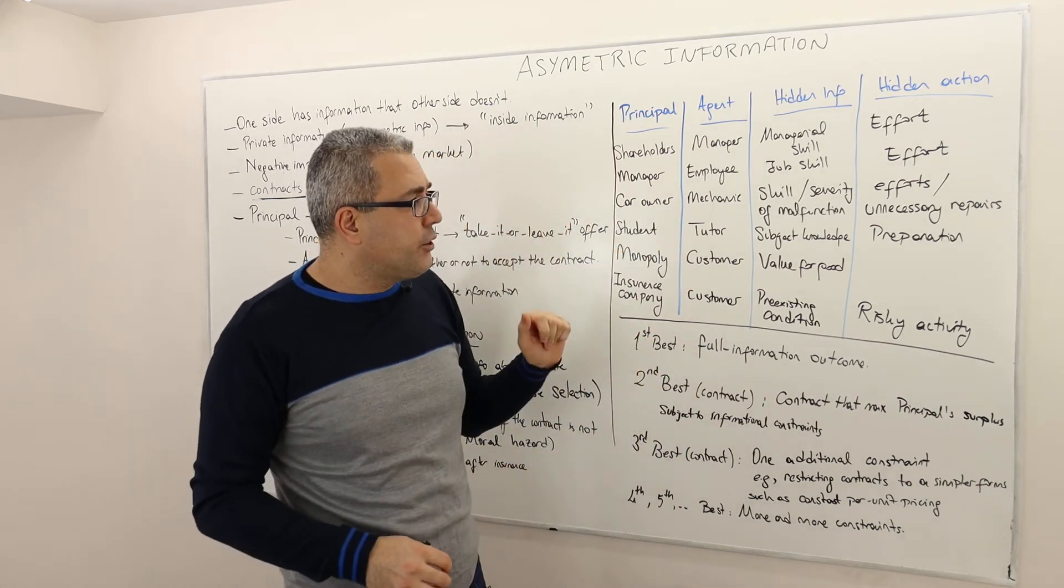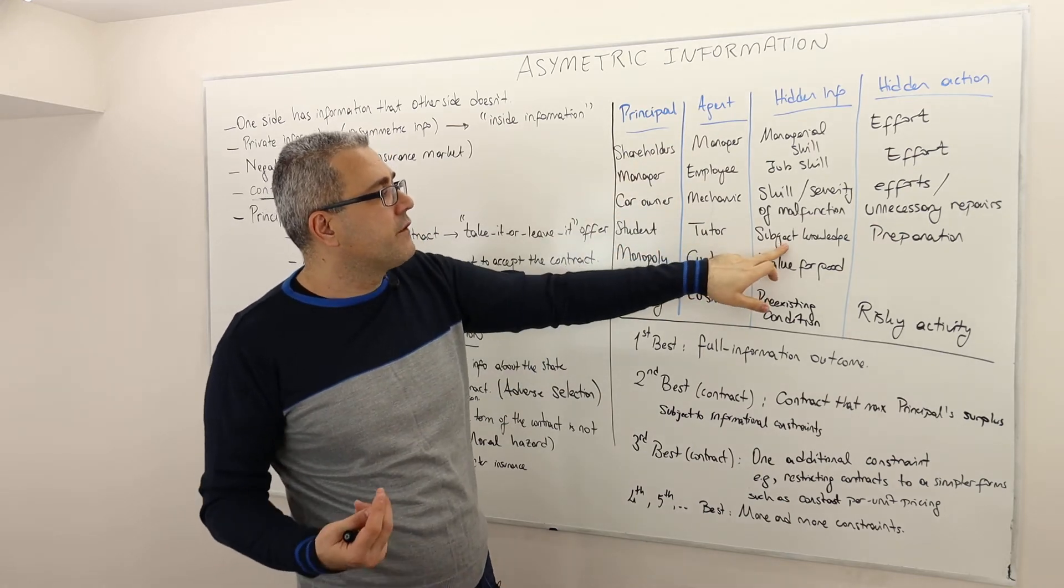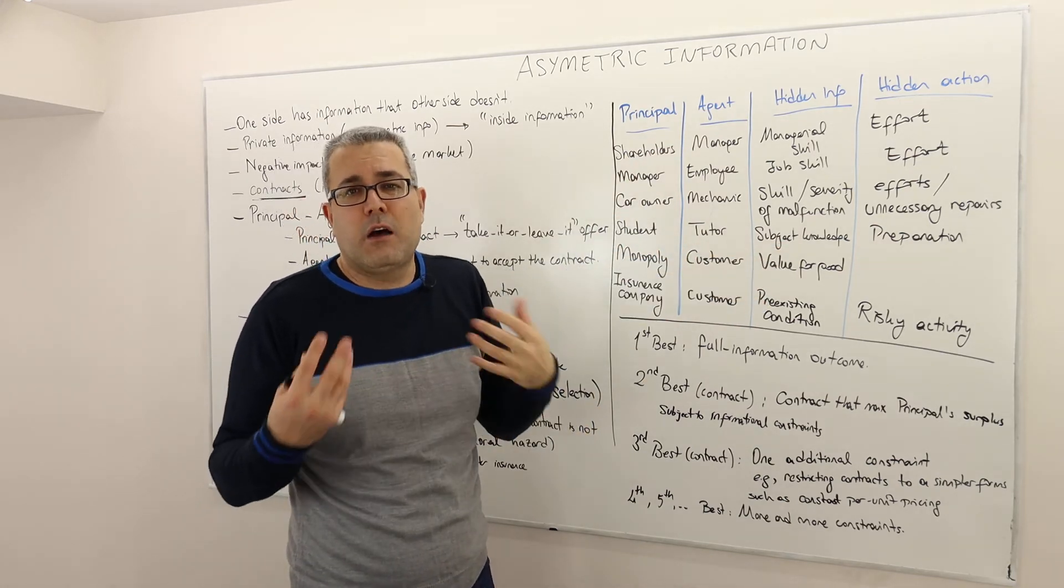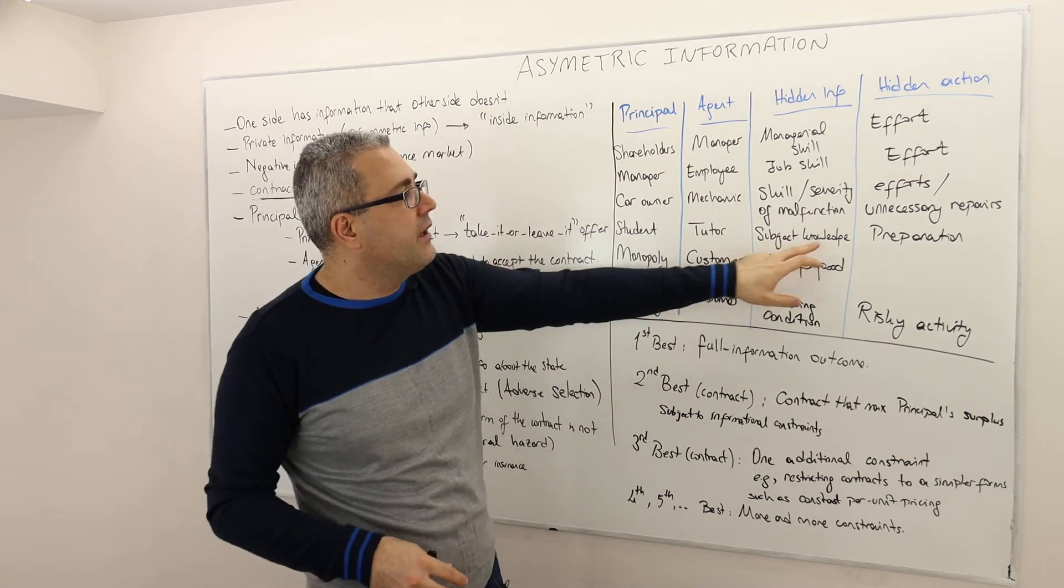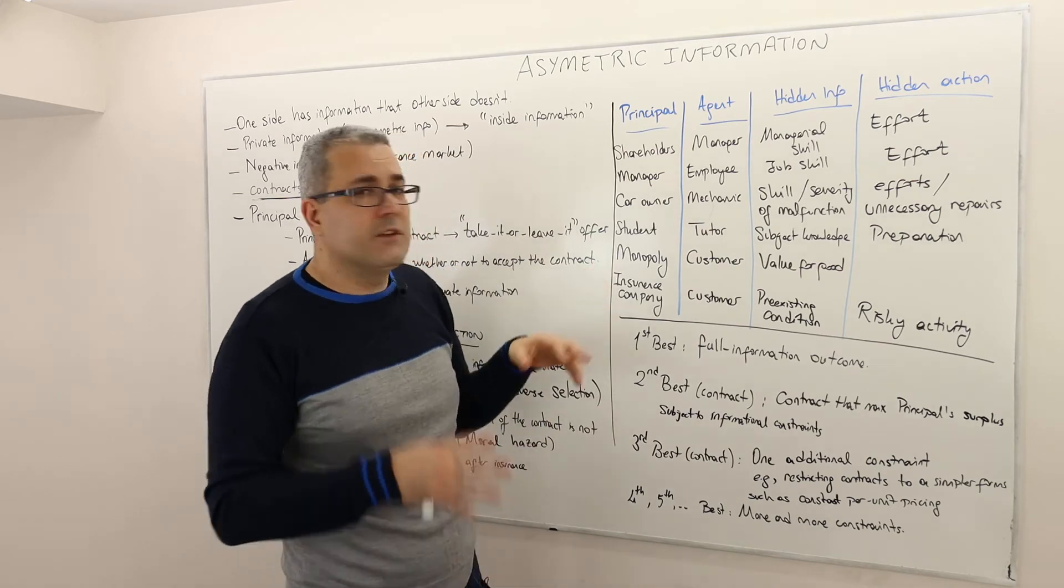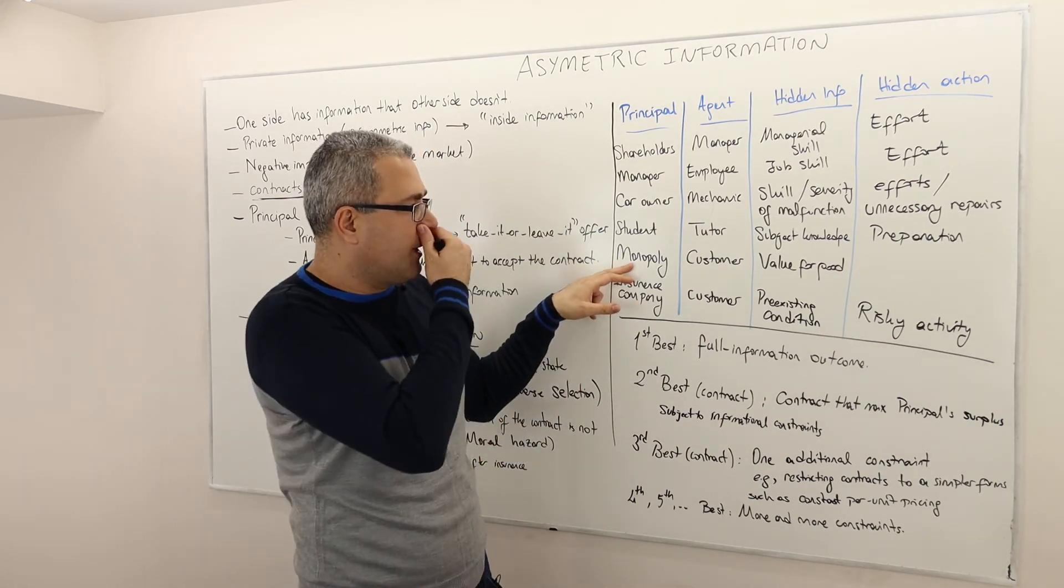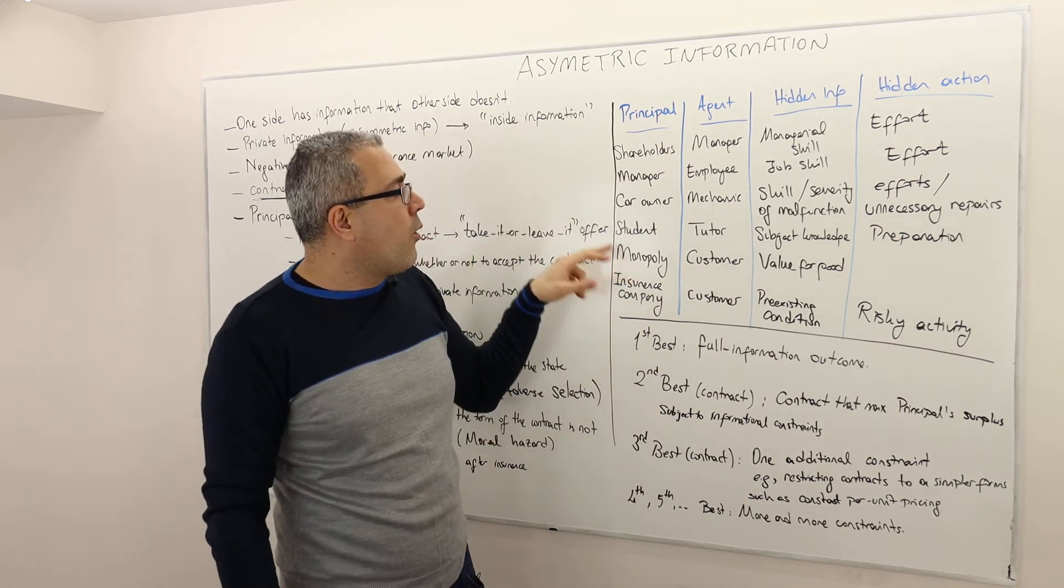Student versus tutor. Tutor is the agent, student is the principal. Hidden information is the subject knowledge, so how knowledgeable the tutor is, and the hidden action may be how well prepared the tutor is before you start tutoring.